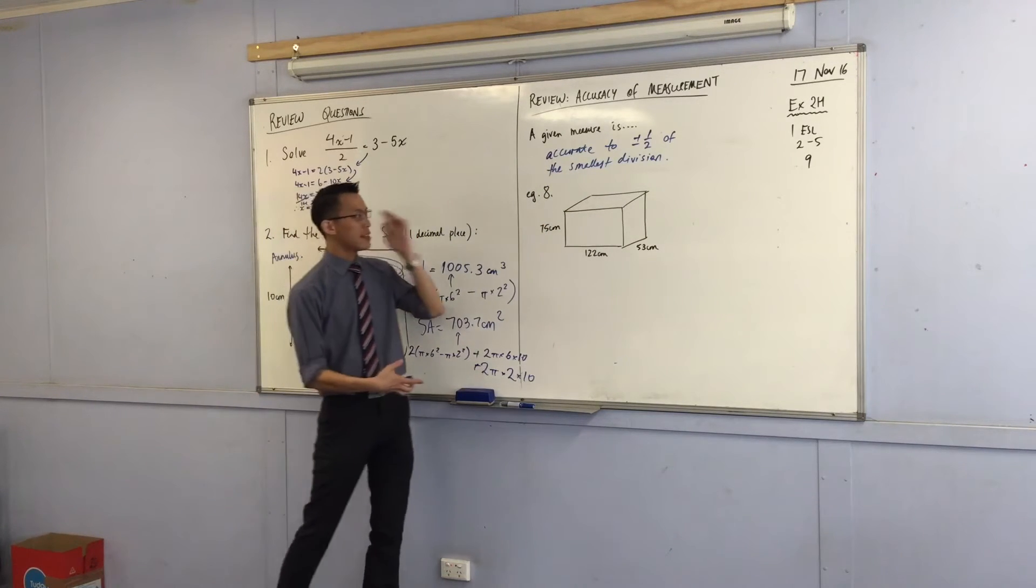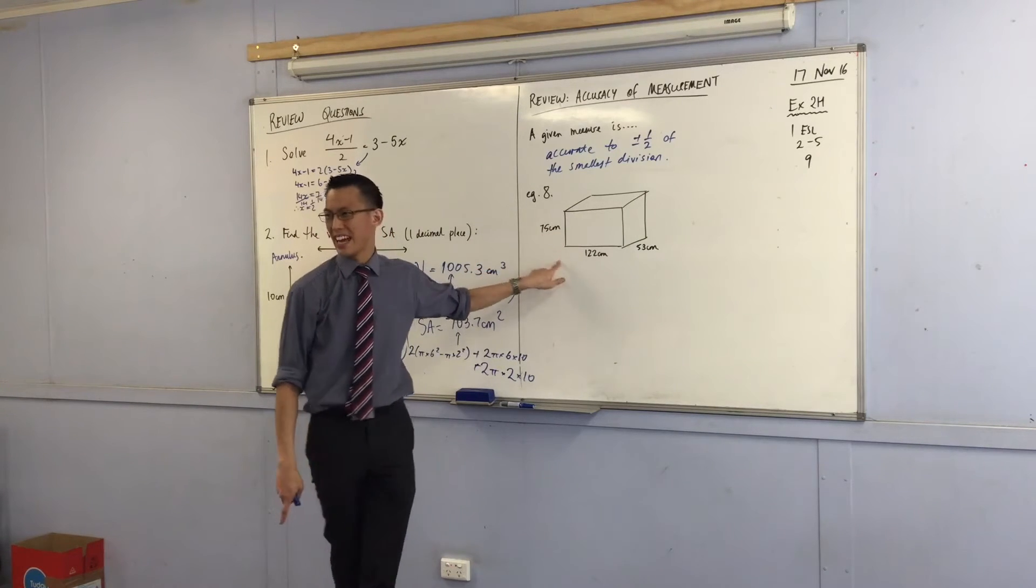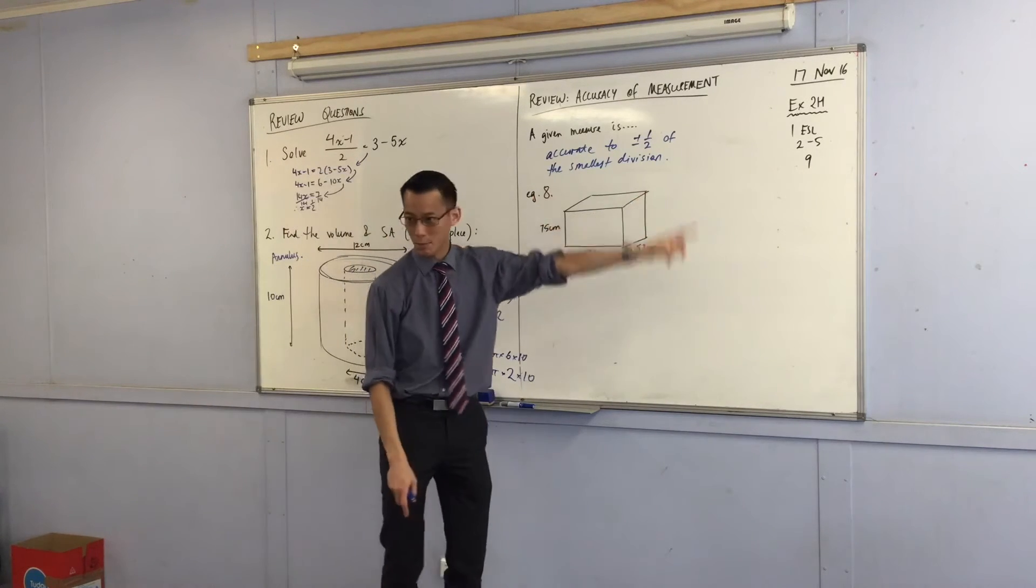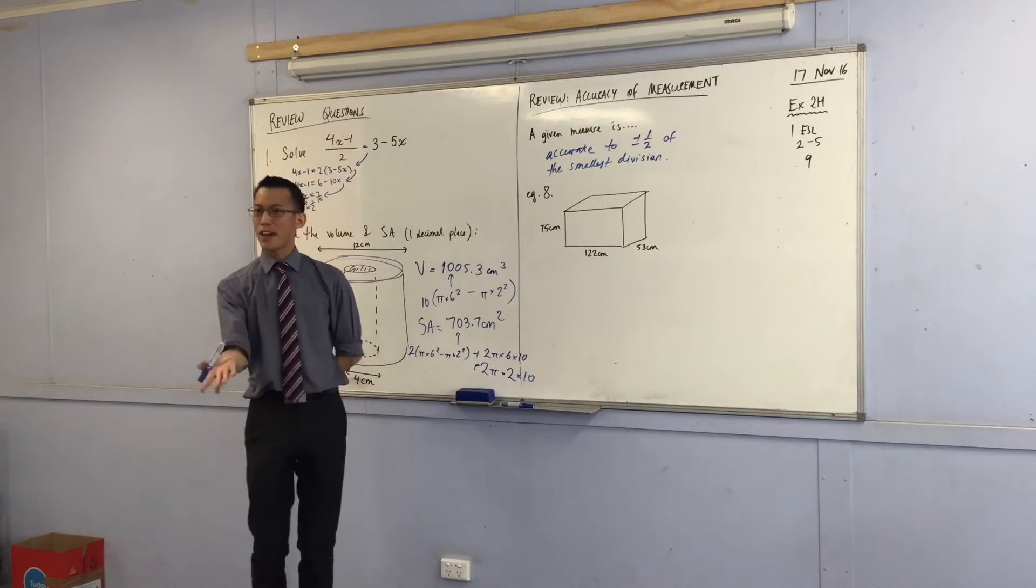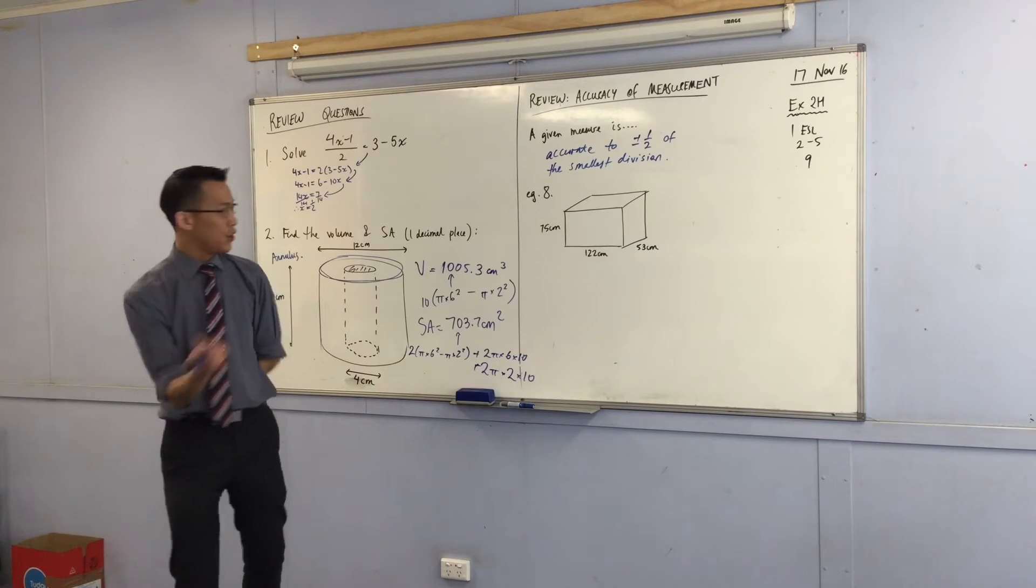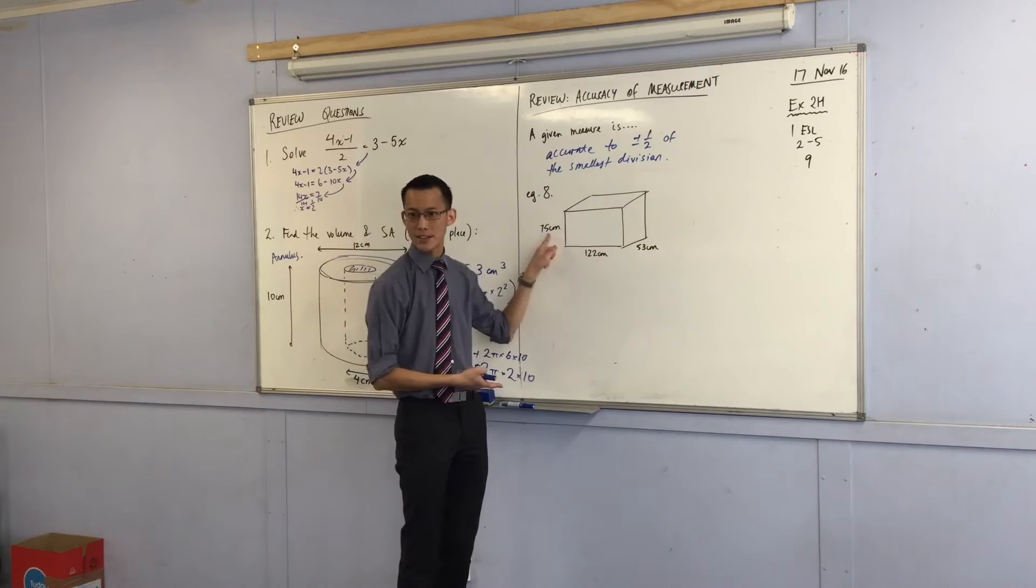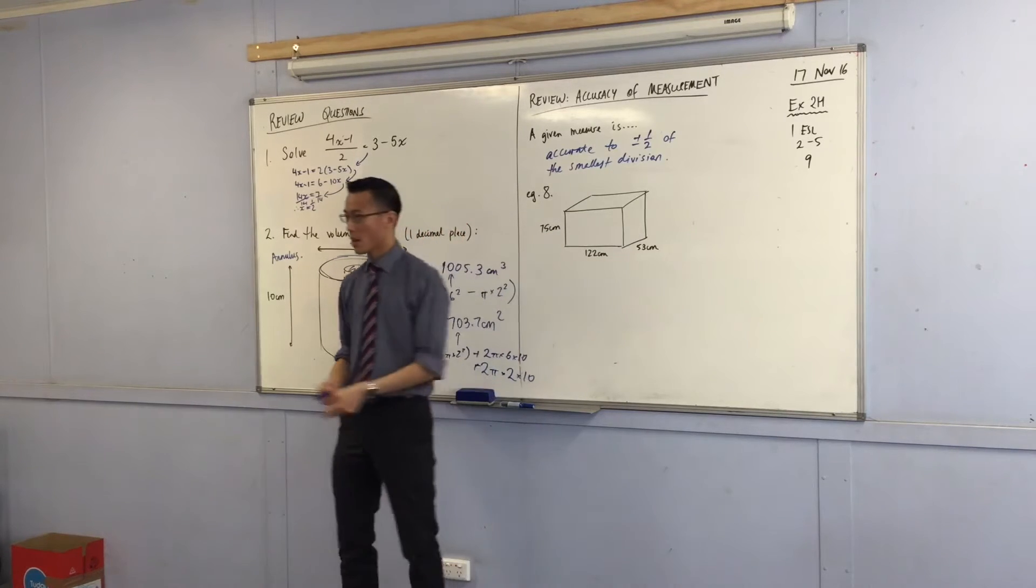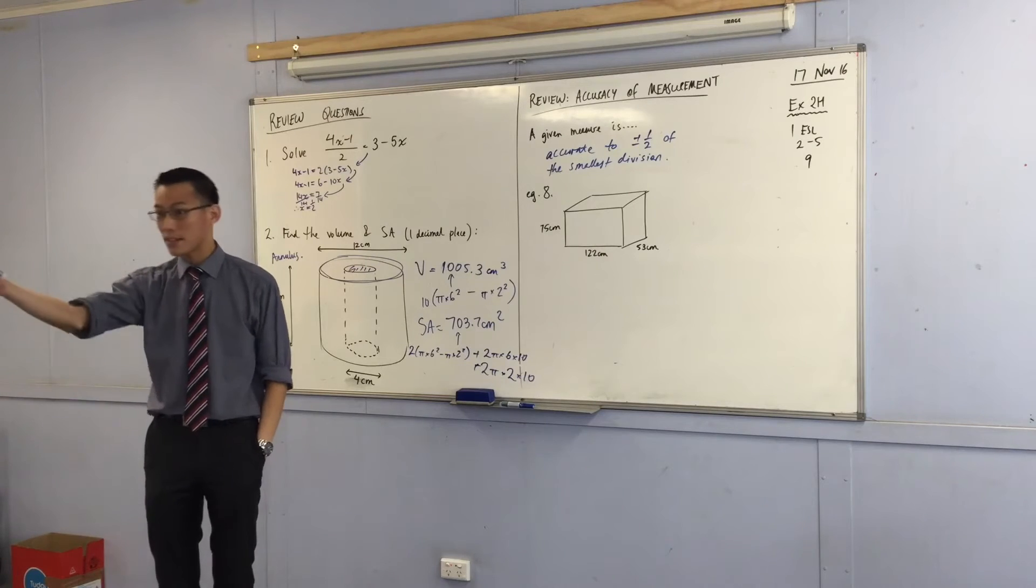Now what's nice about this is that you can know, even without seeing the measuring instrument, you can know what the level of accuracy was by looking at the measurements that have been provided to you. This is actually question 8 from the exercise you're about to start, which is why I haven't assigned question 8. So when you look at these, what was used to measure this? What was the accuracy for it? It's going to be by the centimeter.